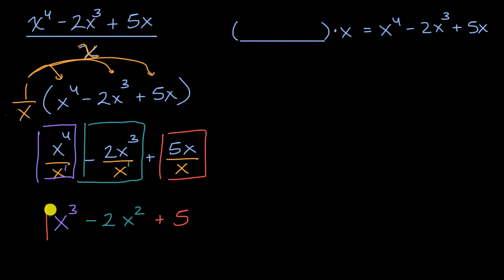And you can verify that this indeed, if I were to multiply it by x, I'm going to get x to the fourth minus two x to the third plus five x. Let me do that. If I put x to the third minus two x squared plus five times x, what I can do is distribute the x. x times x to the third is x to the fourth, x times negative two x squared is negative two x to the third, x times five is five x.